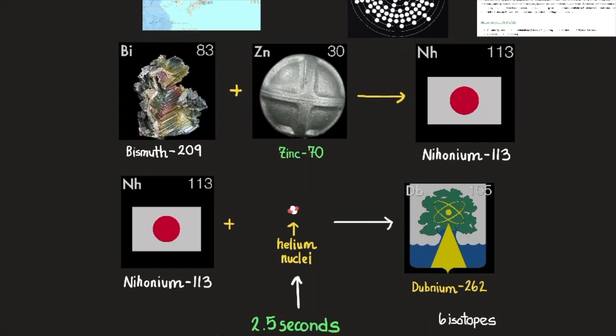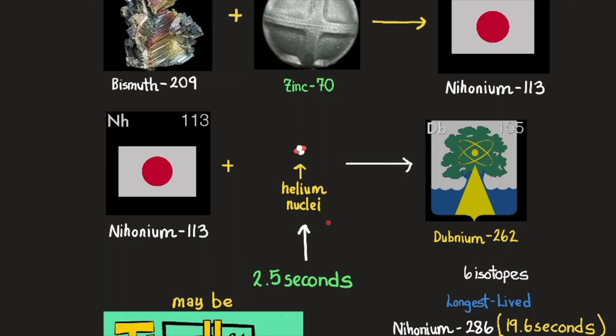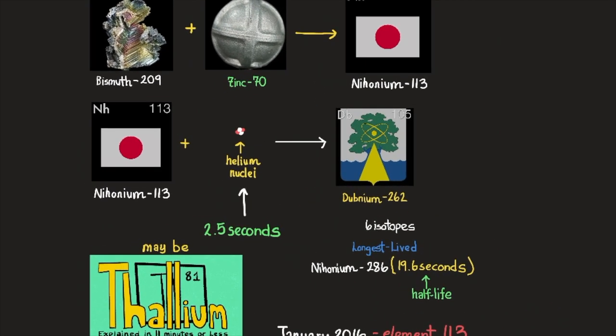Extremely radioactive, the atom decayed through emission of alpha particles, which is a helium nuclei without its electrons. Losing the helium nucleus, it decayed to dubnium 262 in about 2.5 seconds.